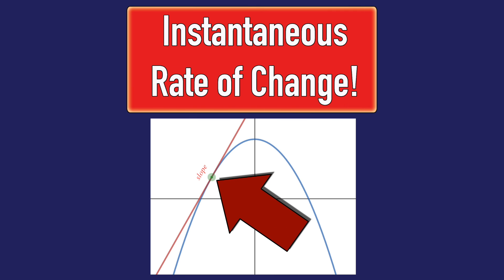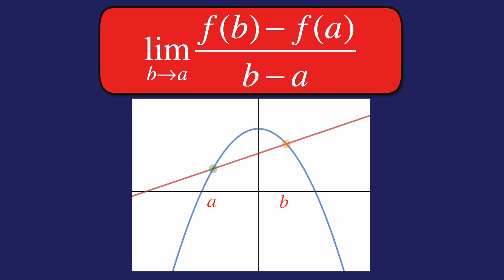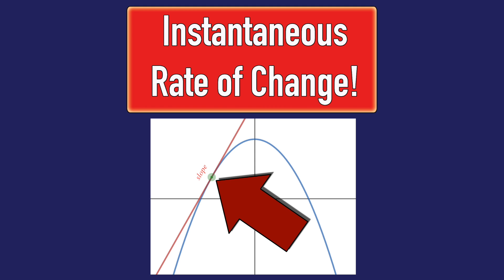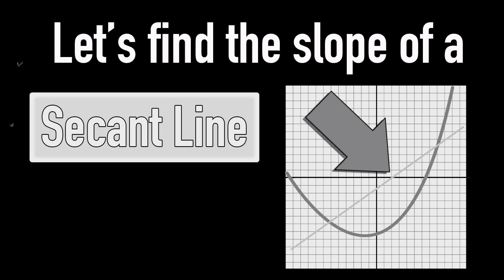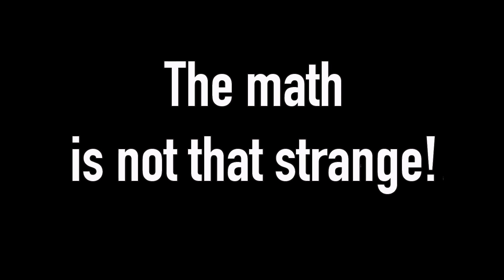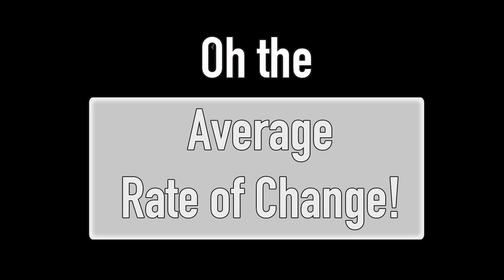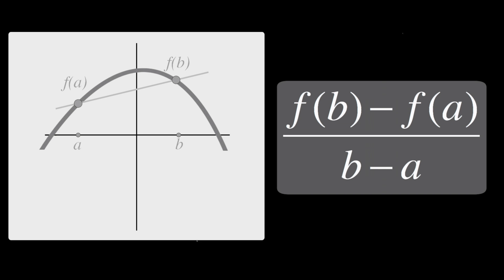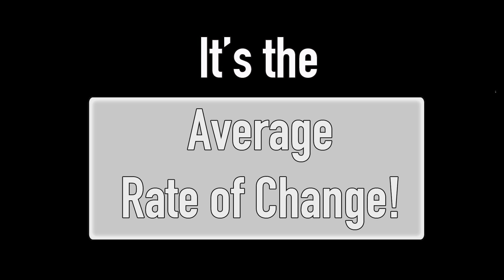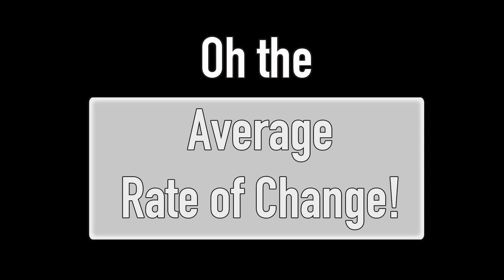Instantaneous rate of change. The limit of the average rate of change as b goes to a — instantaneous rate of change. On the slope of the secant line, the math is not that strange. f(b) minus f(a) over b minus a — it's the average rate of change.